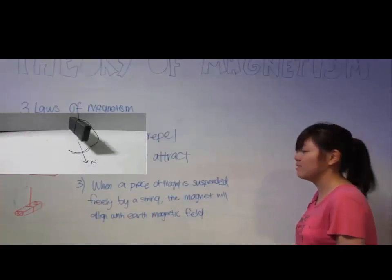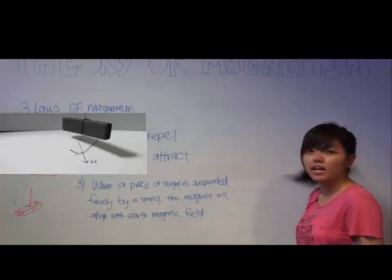Thirdly, when a piece of magnet is suspended freely by a string, the magnet will align in the earth's magnetic field.